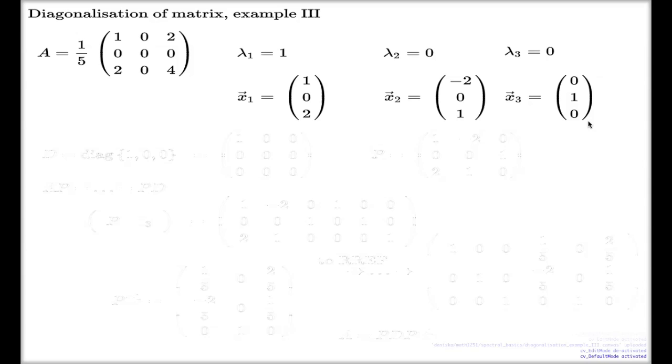So in this case, thanks to having three linearly independent eigenvectors, even though the eigenvalues are not, we don't have three eigenvalues, thanks to having three linearly independent eigenvectors, we will be able to diagonalize. Here it is.